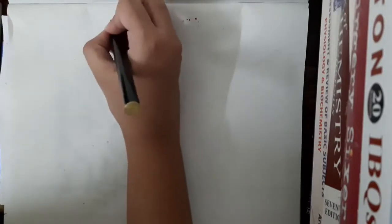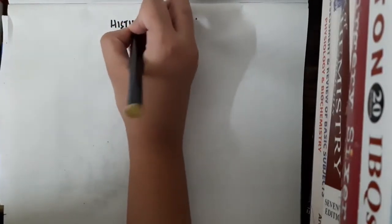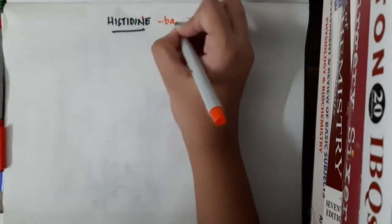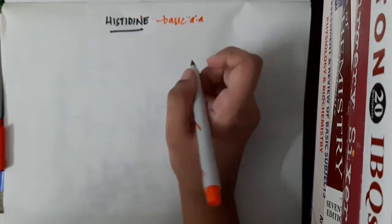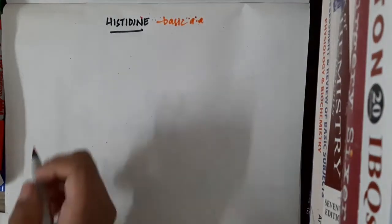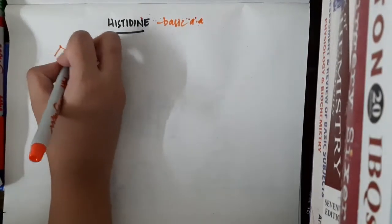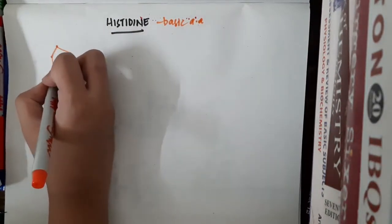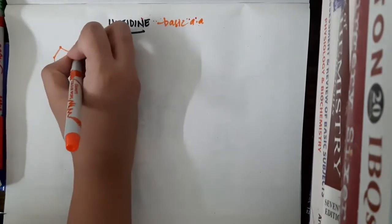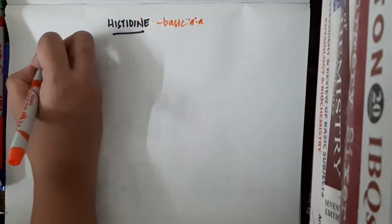Hello friends, let us learn some important points about the amino acid histidine. Histidine is a basic amino acid and it has a ring called the imidazole ring present in it.